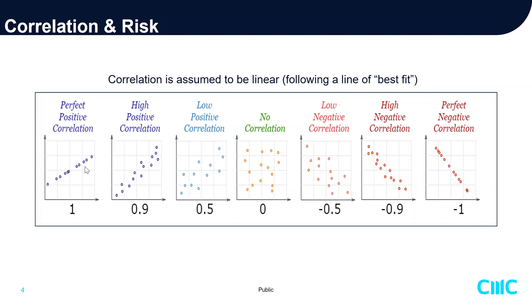A positive correlation — a perfect correlation — means whenever X moves by one, Y also moves similarly. At 0.9 it's still a strong positive correlation. At 0.5 it's almost scattered, so there's no strong positive correlation. Negative 0.5 is a low negative correlation, and from negative 0.9 to negative one you start to see a highly negative correlation, meaning the two instruments move inversely.